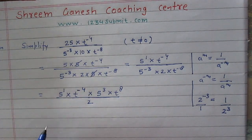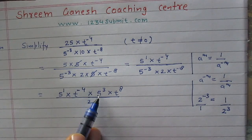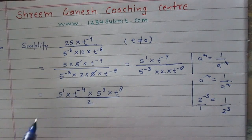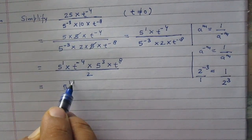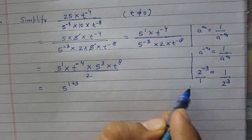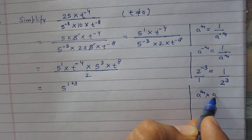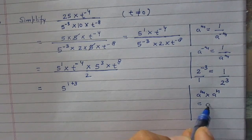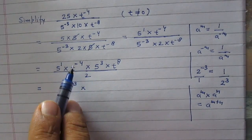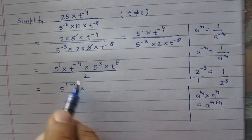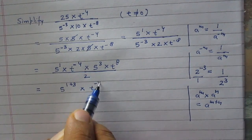5 raised to power 1 and 5 raised to power 3 have the same base and are multiplying, so the powers are added. Using the rule a raised to power m multiplied by a raised to power n equals a raised to power m plus n, we get 5 raised to power 1 plus 3. Similarly, t raised to power minus 4 multiplied by t raised to power 8 becomes t raised to power minus 4 plus 8.